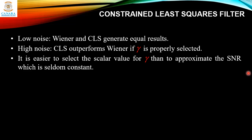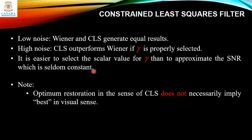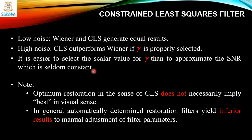It is easier to select the scalar value of γ than to approximate the SNR, which is seldom constant in the case of the Wiener filter. It is important to keep in mind that optimum restoration in the sense of constrained least squares does not necessarily imply best in the visual sense. Depending on the nature and magnitude of the degradation and noise, other parameters in the algorithm also play a role. In general, automatically determined restoration filters yield inferior results to manual adjustment of filter parameters, which is particularly true for the CLS filter, which is completely specified by a single scalar parameter γ.